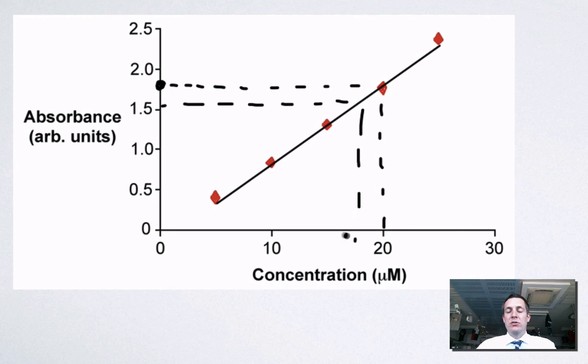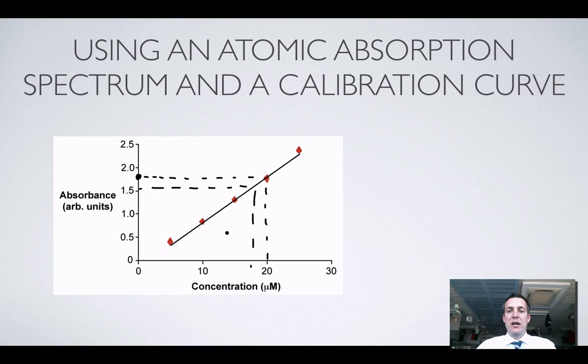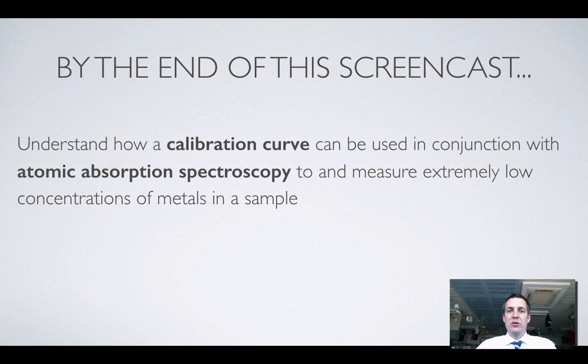So hopefully, if the Australians amongst you are now feeling a real upwelling of pride in your country, and you hopefully all of you, whether you're Australian or not, know how we can use a calibration curve and our atomic absorption spectrometer to measure metals, and they don't have to be heavy metals but any element, down to extremely low concentrations.